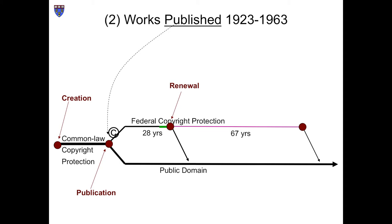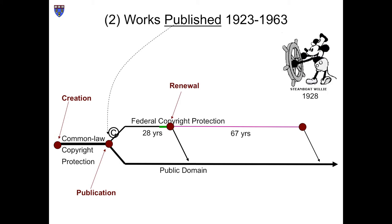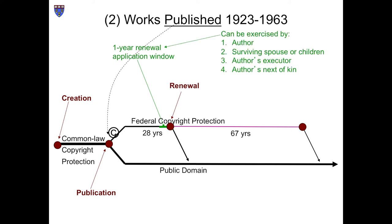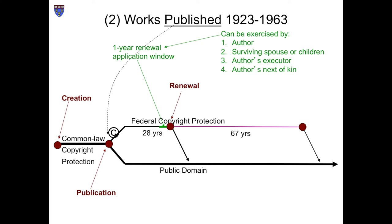The second category consists of works published between 1923 and 1963. These were rescued before their expiration by the Copyright Term Extension Act. The most famous member of this group is Mickey Mouse, a copyrighted character who first appeared publicly in the 1928 cartoon Steamboat Willie. Copyrights in these works will begin to expire in 2018, 95 years after their first publication. Mickey Mouse himself will fall into the public domain on or about 2023, unless yet another amendment of the statute rescues him again. Not all works published during this interval are still alive, however — only those that were properly renewed survive. The large majority of works registered during this interval were not renewed, so most copyrights in this category have expired.